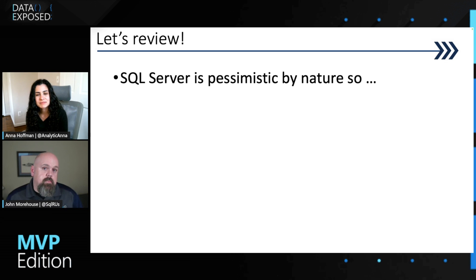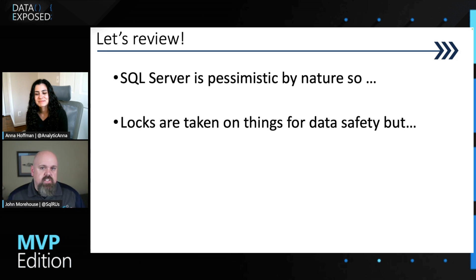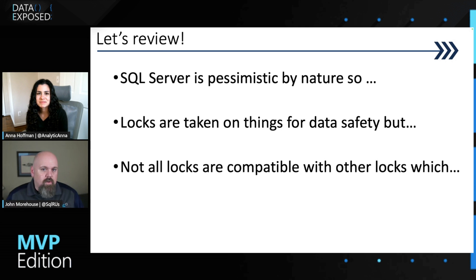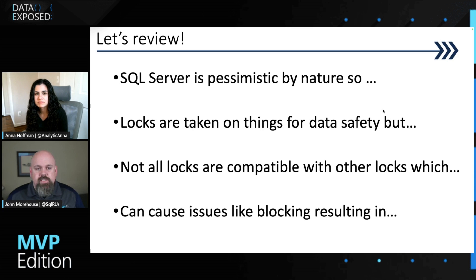We're going to talk about Optimized Locking, and this is pretty new. Microsoft has been working on it for a while. It's actually out live today, and Microsoft kind of snuck it under the window, so not a lot of people are talking about it. One of the things we struggle with today as data professionals is that SQL Server is pessimistic by nature. When we modify data, we have to take locks on things — tables, pages, and rows — to ensure those changes are done effectively and consistently. Because those locks are taken, not all locks are compatible with each other, so as multiple people are modifying data at the same time, it can cause blocking, which results in frustrations.